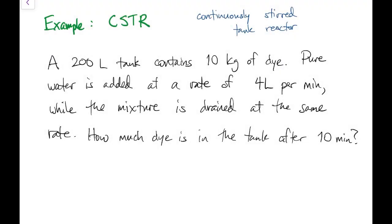Let's look at one last type of example. That's the continuously stirred tank reactor, although we won't actually be doing much in terms of reactions. So here we have a 200-liter tank that contains 10 kilograms of dye. Pure water is being added in at the rate of 4 liters per minute. At the same time, the mixture of water and dye is being drained at that same rate. The question, then, is how much dye remains in the tank after 10 minutes?